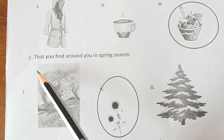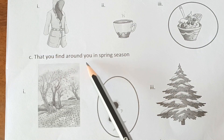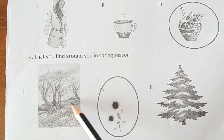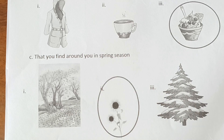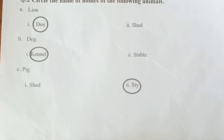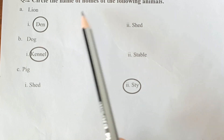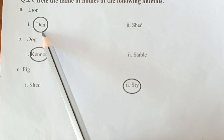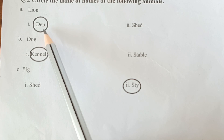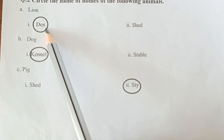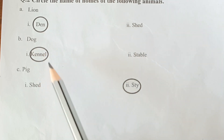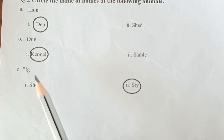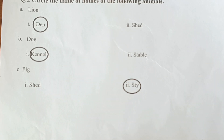Next, circle what you find around you in spring season. Next question: Circle the name of the homes of the following animals. Lion — Den. Dog — Kennel. Pig — Shed or Sty.